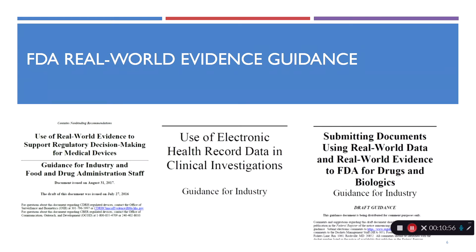The second guidance is on the use of electronic health record data in clinical investigations. This is specific to drugs and biologics and the use of real-world data in the form of electronic health record data in clinical trials — as evidence of patient outcomes and safety and effectiveness. This guidance meets some of the requirements for the real-world evidence program but is specifically focused on electronic health record data. As we'll see in the second module, there are many sources of real-world data, and this guidance can likely apply to other sources as well.